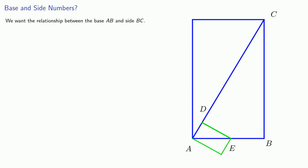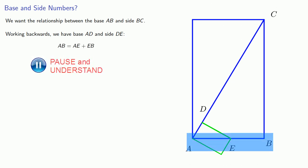And what we want is the relationship between the base AB and the side BC. So working backwards, we have base AD and side DE. Our new base AB will be AE plus EB.